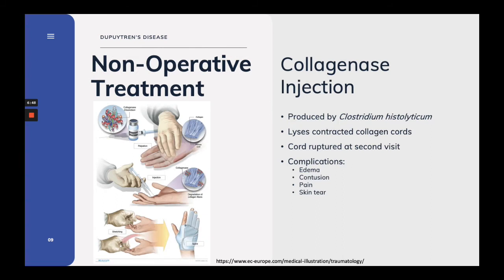Collagenase is derived from Clostridium histolyticum. It's injected into diseased cords and works by lysing contracted collagen cords. After the injection, a second appointment several days later is made where external manipulation extends the injected cord, resulting in its rupture. This less invasive technique can be done in the office without the use of general anesthesia. Complications in the short term include edema, pain, and skin tear from cord rupture.